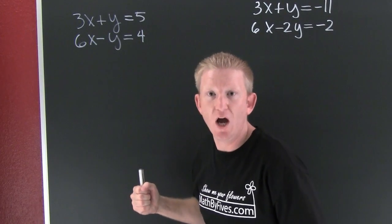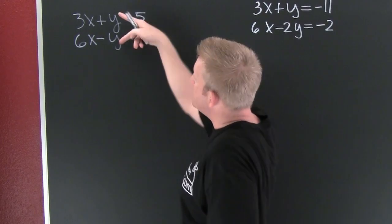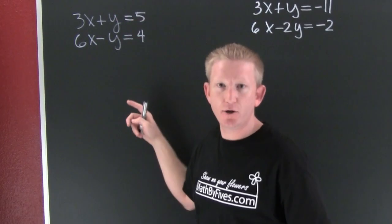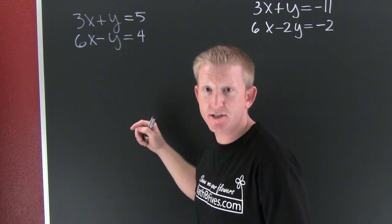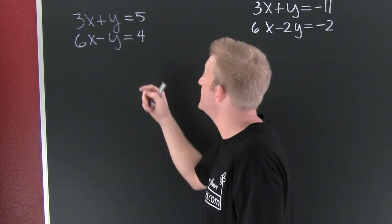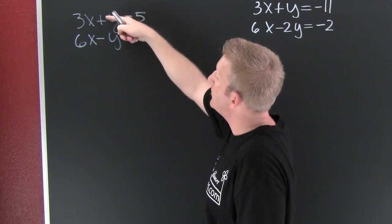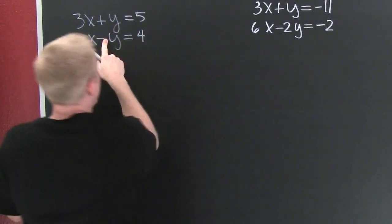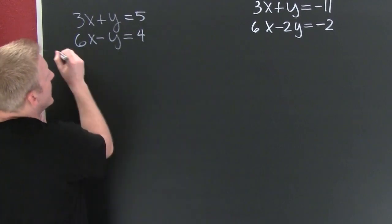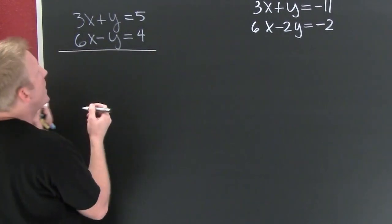I need to pick a variable to eliminate. Here, it appears it's gonna be y. Why? Because they already have additive inverses. Additive inverses are the number that when added to the number, the sum is none. Here I have a positive y and a negative y.